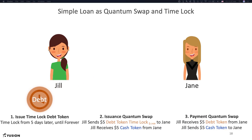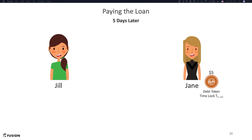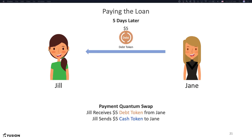Let's follow the exchange between Jill and Jane through the lens of Fusion's quantum swap and debt token. Upon loan initiation, instead of sending a straight debt token to Jane, Jill sends the time-locked debt token. In return, Jane sends Jill the five dollars cash token. This is the execution of the issuance swap. After five days, the time-locked debt token matures and Jane now holds a full debt token. Jane can then send her debt token to Jill, who pays back the five dollars cash token through execution of the payment quantum swap. We have successfully modeled the loan dynamics in Fusion with quantum swaps and time locks.